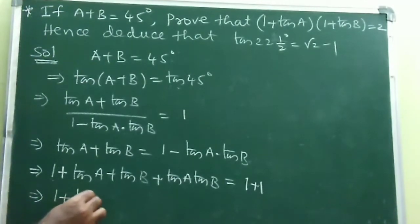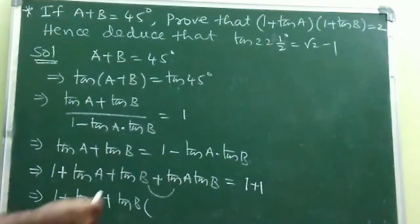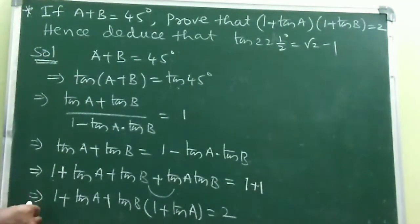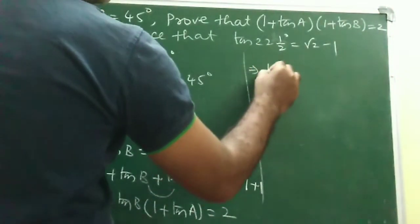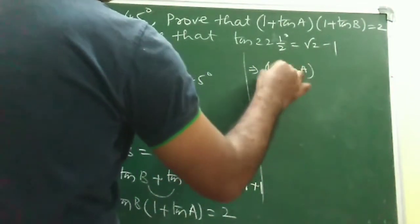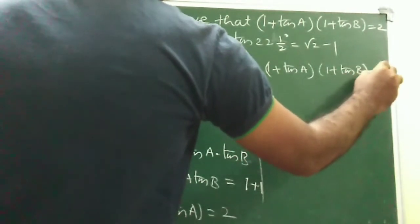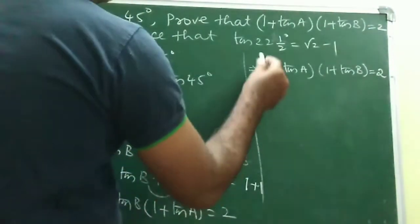Now see the magic: factor the left side. Take tan B common from the last two terms: 1 + tan A + tan B(1 + tan A) = 2. Then take (1 + tan A) common: (1 + tan A)(1 + tan B) = 2. This is the condition we needed to prove.